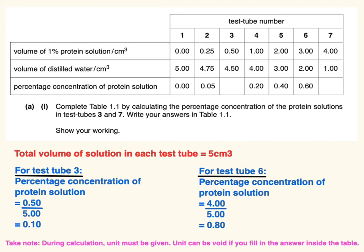For test tube 3, identify the volume of protein solution, which is 0.5, divided by the total volume of 5.00, giving a percentage concentration of 0.10. For test tube 6, the volume of protein solution is 4.00 divided by 5.00, giving a percentage concentration of 0.80. Note that units must be given during calculation, but if filling in a table you can omit writing units in each cell.